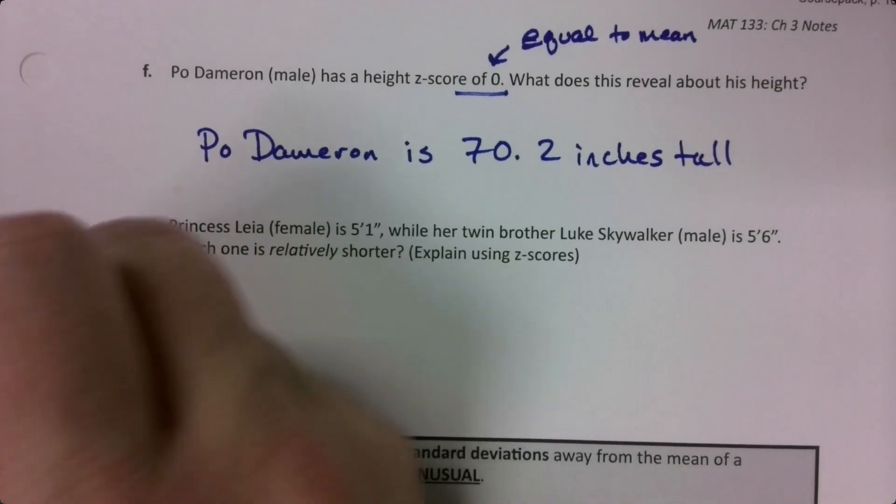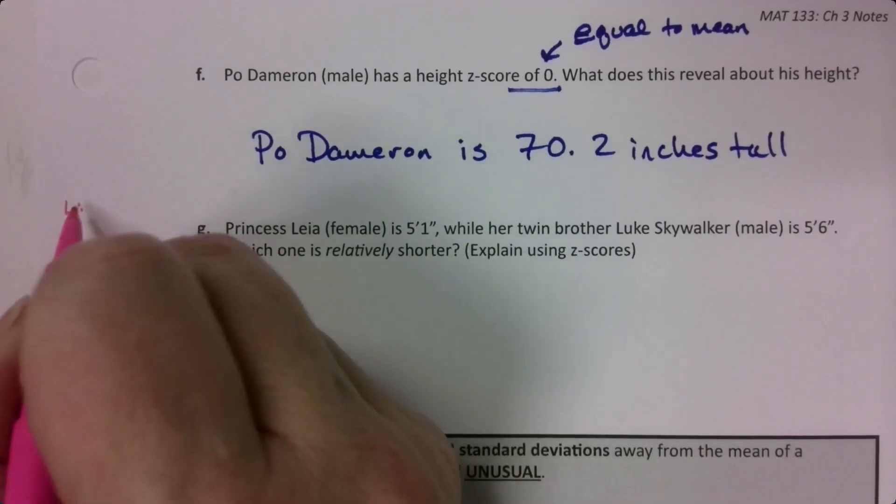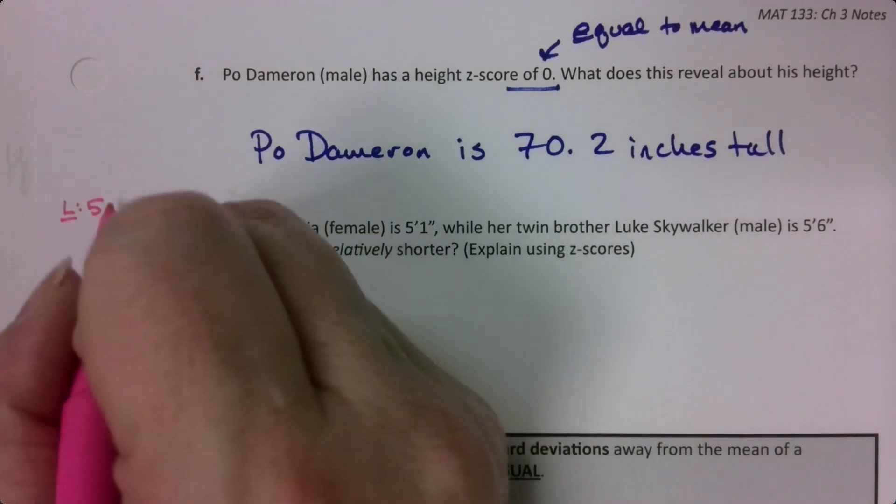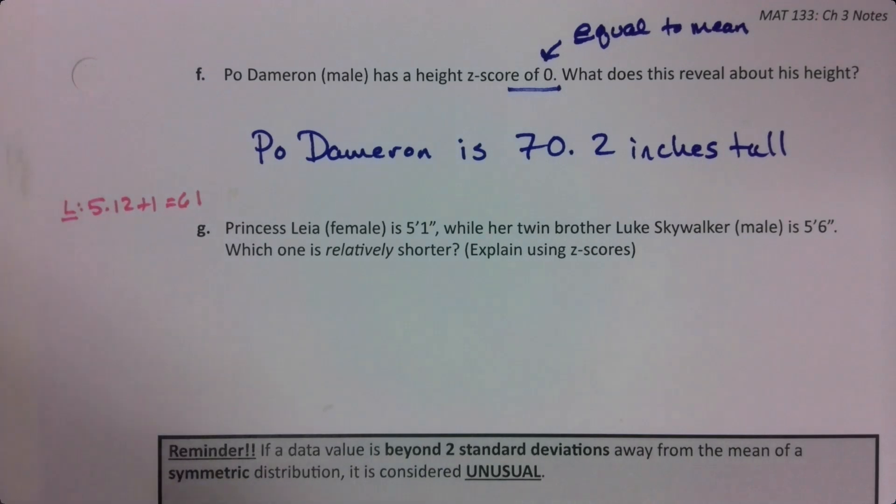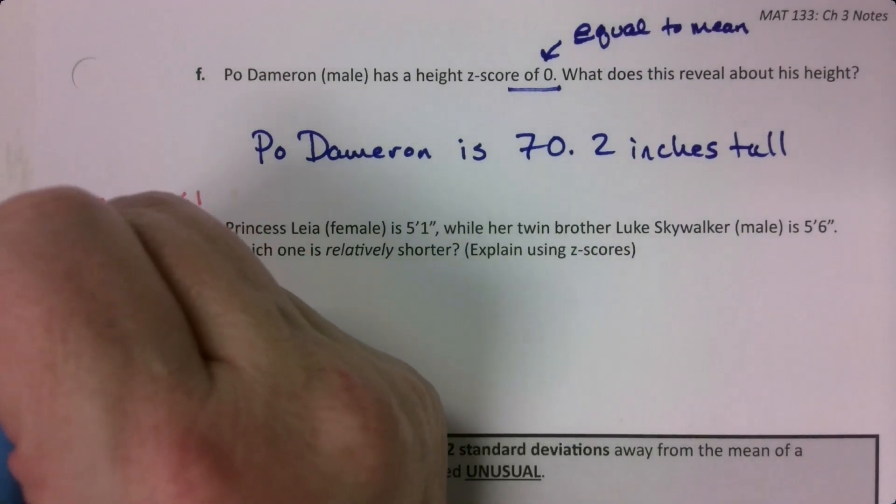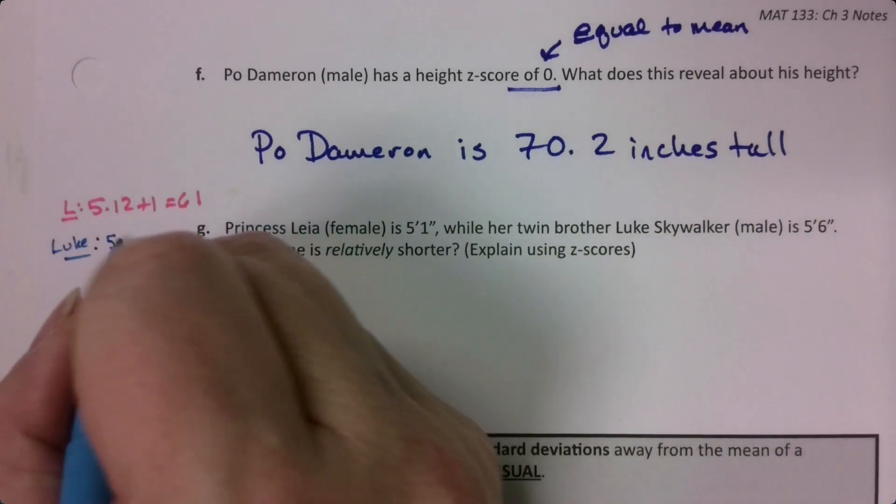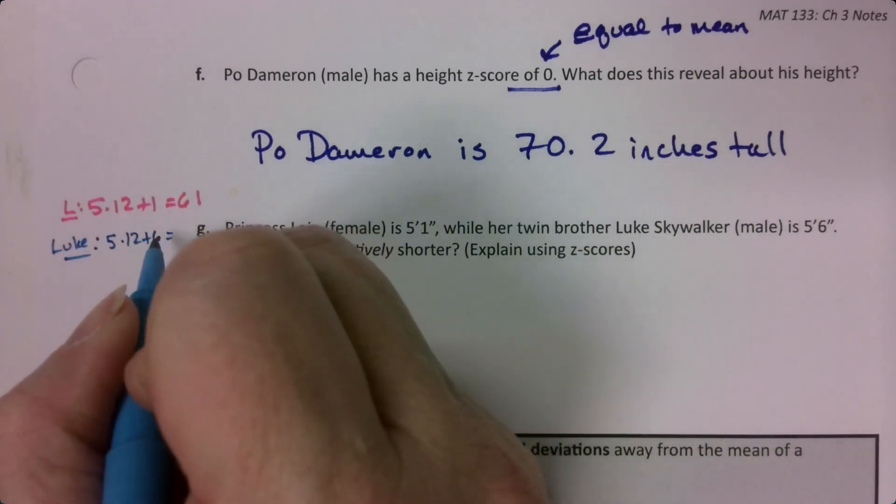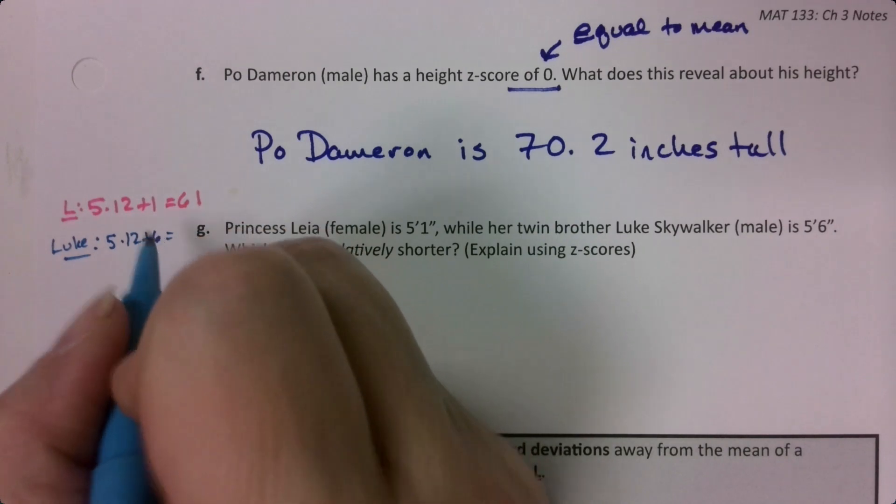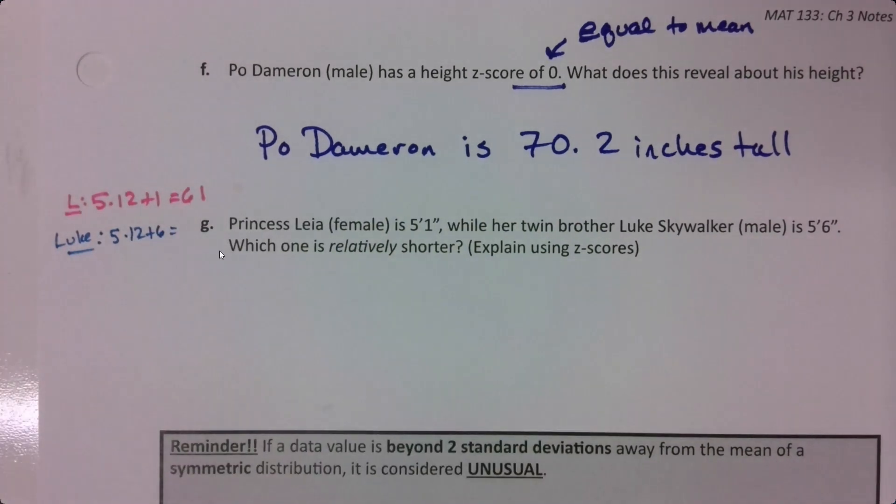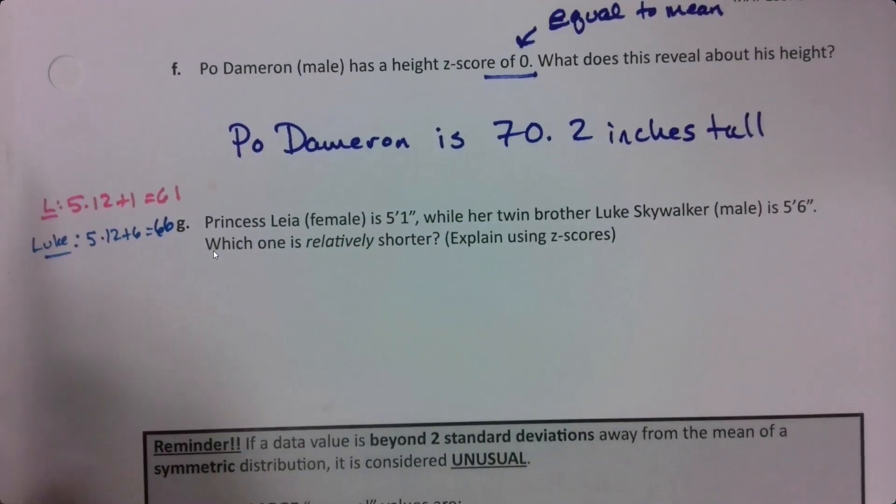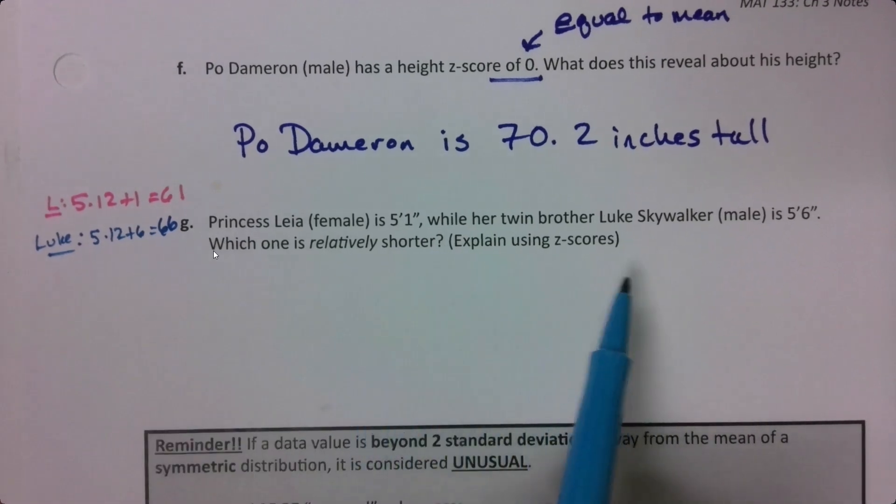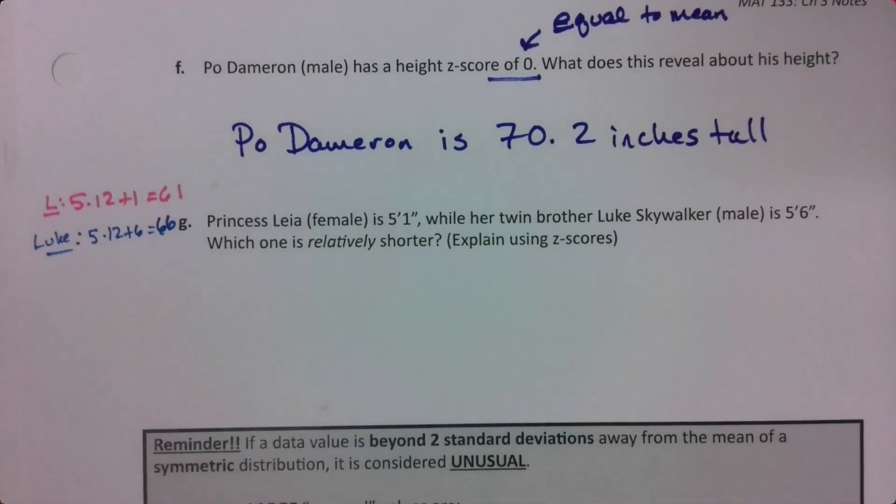Let's figure out their heights in inches. Leia is five times twelve plus one, which is 61 inches tall. And Luke is five times twelve plus six, which is 66 inches tall. This whole feet-inches thing doesn't do us any good.